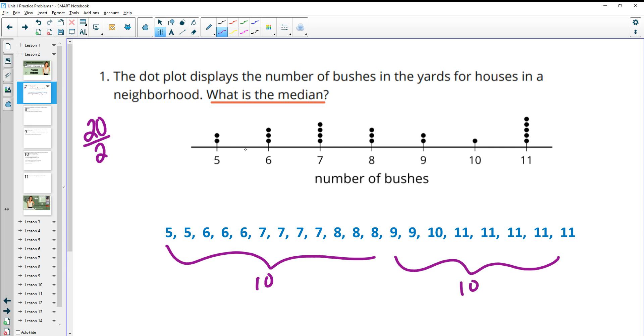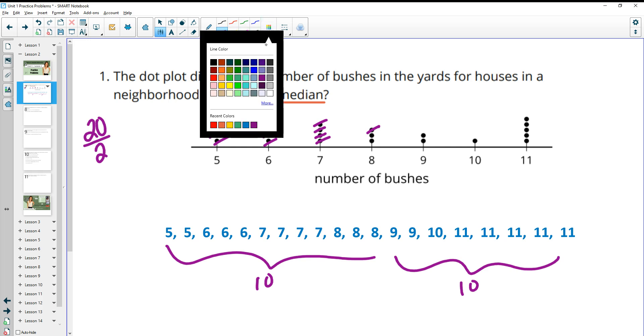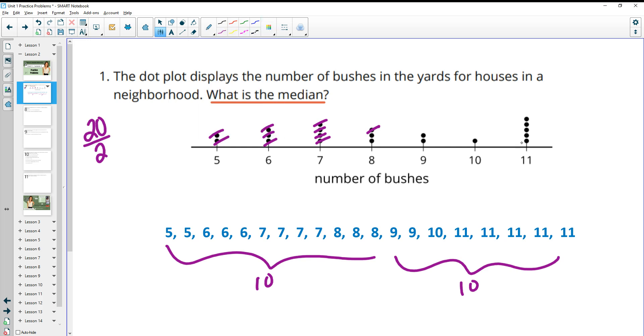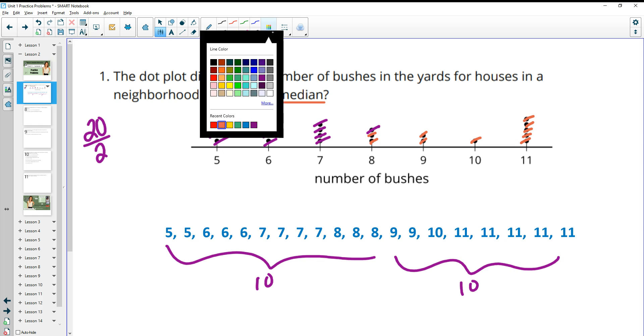So we could count up 10 data points here: 1, 2, 3, 4, 5, 6, 7, 8, 9, 10. And so if we went the other way and counted 10, we would end up at 8 as well. So 1, 2, 3, 4, 5, 6, 7, 8, 9, 10 means that our median is really here at 8.